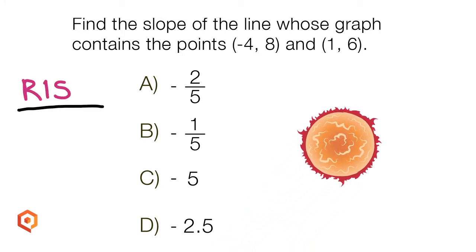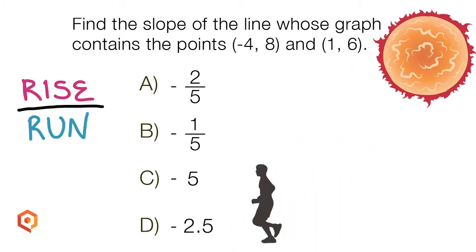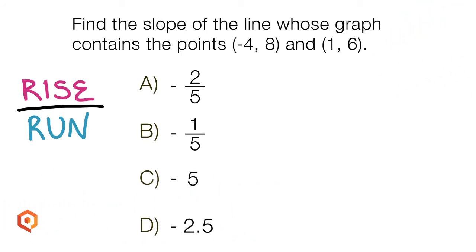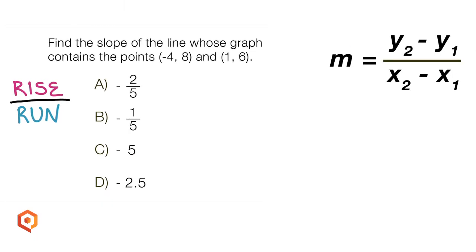Some folks call this rise over run. To find the slope, calculate the difference in the y's divided by the difference in the x's. Another way to describe this is the change in y over the change in x. There are lots of ways to describe slope.